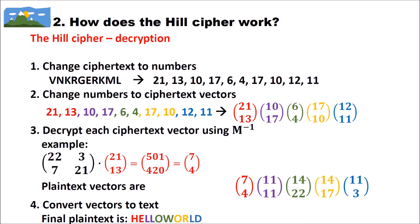Now let's look at decryption. We receive the ciphertext. The first step is to change the ciphertext to numbers: we get 21, 13, and so on. Then we change the numbers to ciphertext vectors: (21, 13), (10, 17), and so on. Then we decrypt each ciphertext vector using our inverse matrix (22, 3, 7, 21). For example, multiplying the inverse matrix by vector (21, 13) gives (501, 420), and taking mod 26 gives (7, 4).